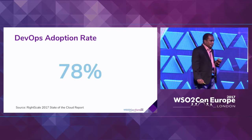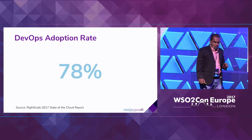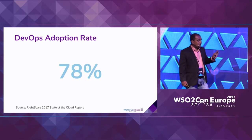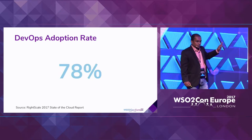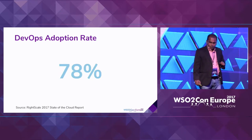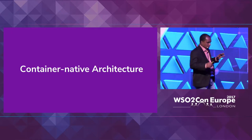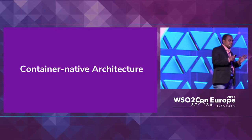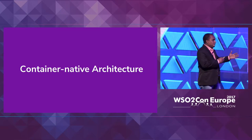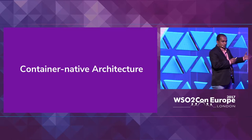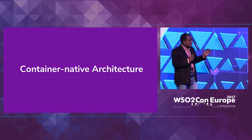The DevOps adoption rate in 2017 shows that 78% of enterprises have now adapted to DevOps. Now let's look at the developer angle. To take development into operations really smoothly, there is also a developer angle — whenever you design your application, you have to think about the correct architecture.